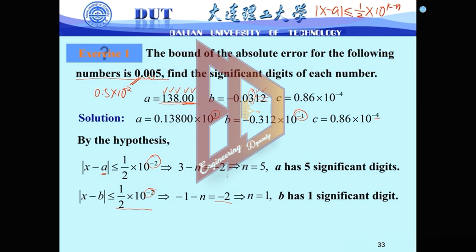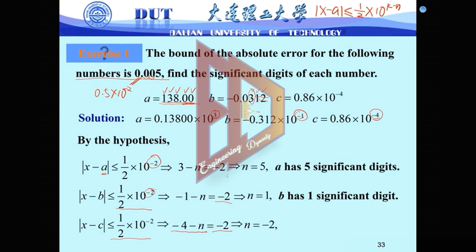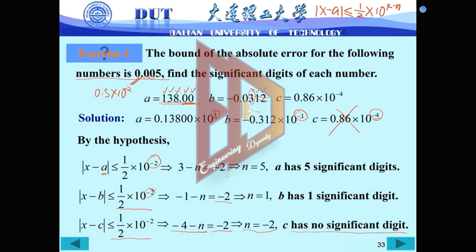We are just given the error bound and the numerical results; we don't know the exact values. But from the error bound, we can determine how many significant digits we have. For C, the error bound is the same. For C, k is minus 4. So we write minus 4 minus n equals minus 2, giving n equals minus 2. Since n should be a positive number, this means C has no significant digits — 8 and 6 are totally wrong.